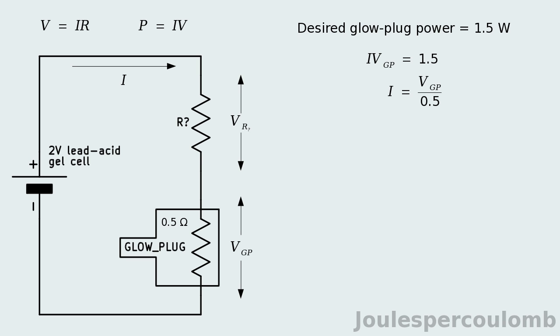From Ohm's law, the current through the glow plug, and so the entire circuit, must equal the voltage across the glow plug divided by its resistance. Substituting this for I in the first equation and solving it to find V_GP reveals that the voltage across the glow plug to two decimal places must be 0.87 volts.